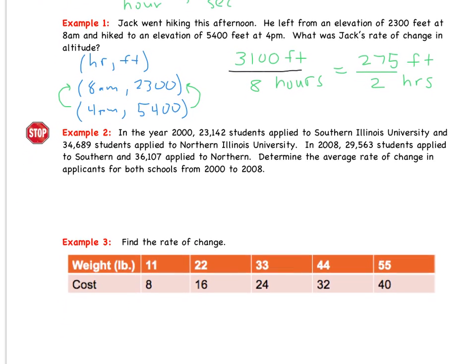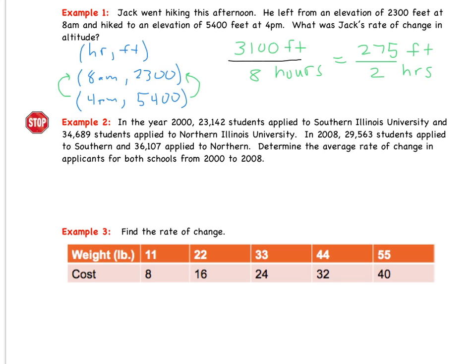Let's move down to example 2. This is a stop sign problem, so I want you to try it on your own. In the year 2000, 23,142 students applied to Southern Illinois University and 34,689 students applied to Northern Illinois University. In 2008, 29,563 students applied to Southern and 36,107 applied to Northern. Determine the average rate of change in applicants for both schools from 2000 to 2008. Go ahead, pause the video, and try this one on your own.